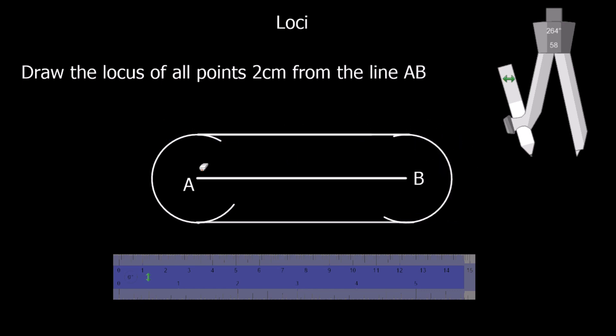Okay, and there we have. We've got a locus of all the points 2 cm away from the line. Obviously we don't need these little extra bits here. You could rub them out.